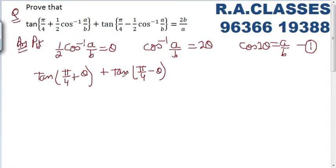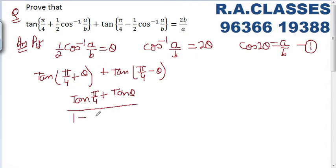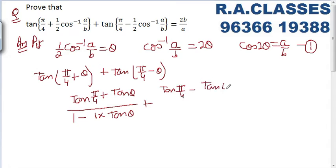Using the formula tan(a+b) · tan(a-b): numerator becomes (1 + tanθ)(1 - tanθ) and applying tan(π/4) = 1. So we get (1 + tanθ)/(1 - tanθ) multiplied by (1 - tanθ)/(1 + tanθ), expanding using the addition and subtraction formulas with tan(π/4) = 1.